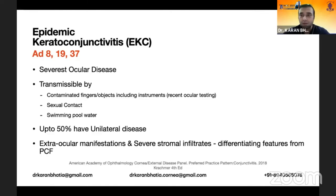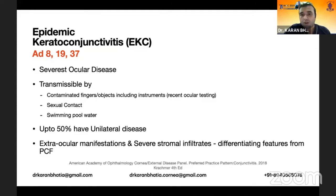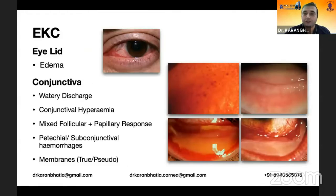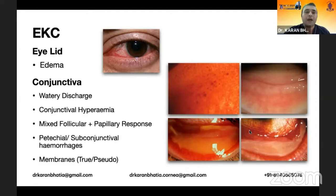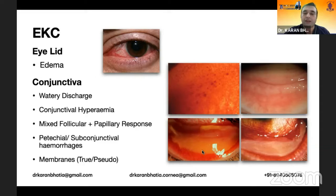About 50% have unilateral disease, but mostly the other eye also gets involved. Differentiating features from pharyngoconjunctival fever would be the absence of extraocular manifestations and the presence of severe stromal infiltrates. These patients have lid edema and watery conjunctival discharge. Congestion is present and there can be a mixed follicular or papillary response, as you can see in this picture showing follicles.